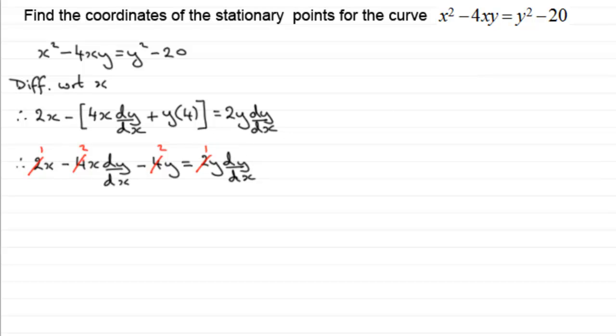Now I can see that each term has got a factor of 2 in it. So I could divide through by 2. So that would go into that term once, into this term twice, into that one twice, and into that one once.